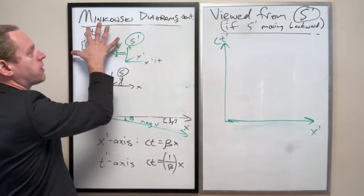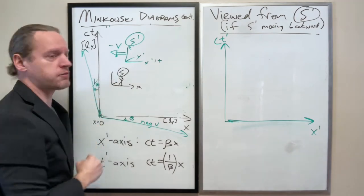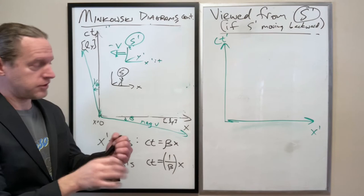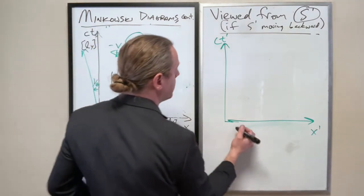I hope that makes sense. But if we flip the direction of the velocity and then we do those inverse transformations, we get back to our normal Lorentz transformations.